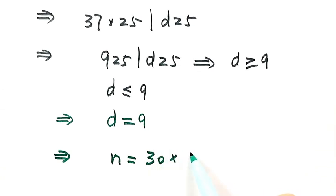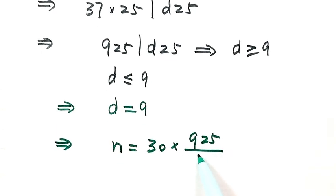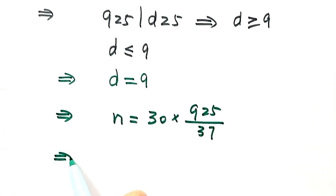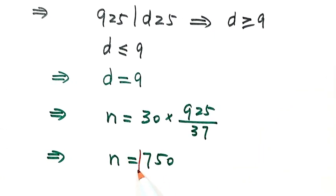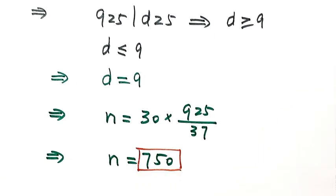So that means n equals 30 times 925 over 37. Then n equals 750. 750 is the answer for this question. Thanks for watching.